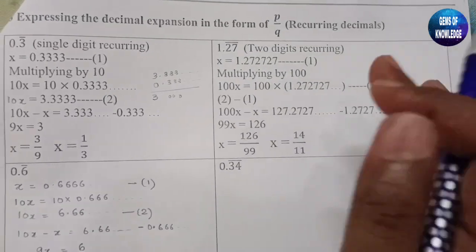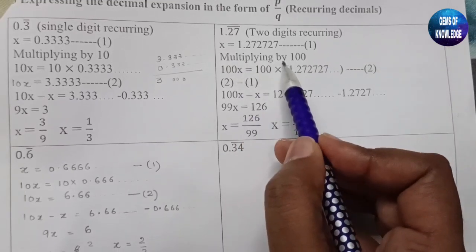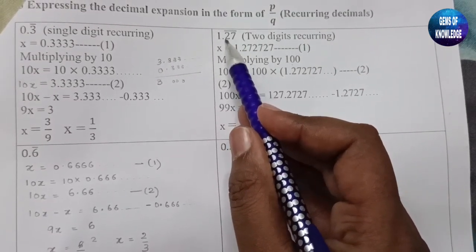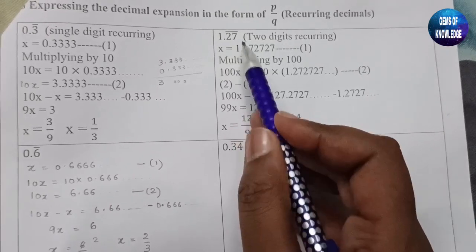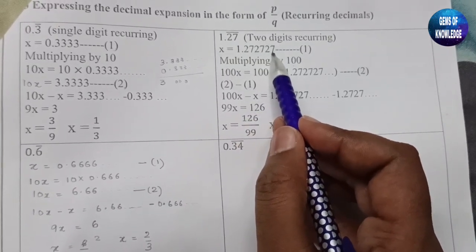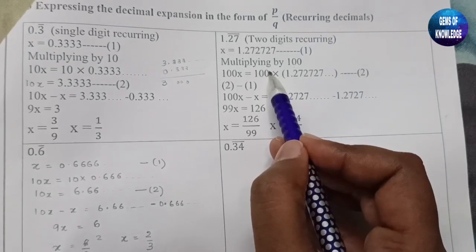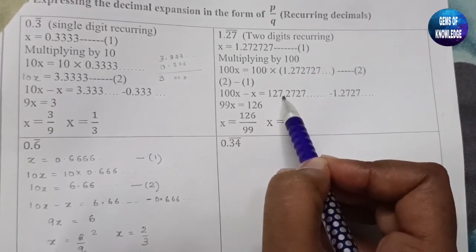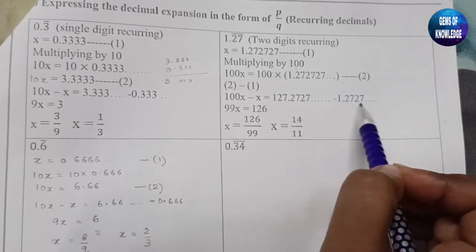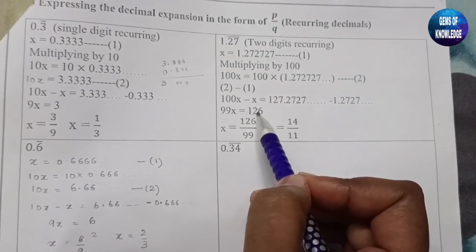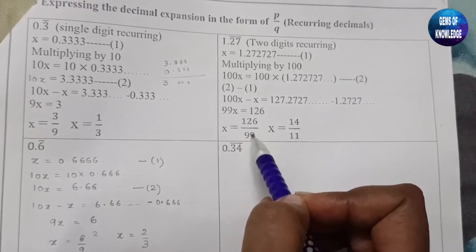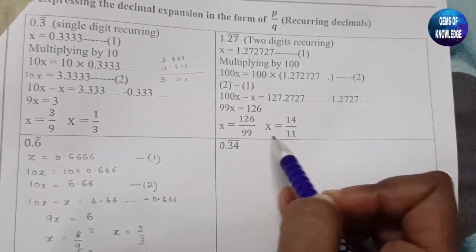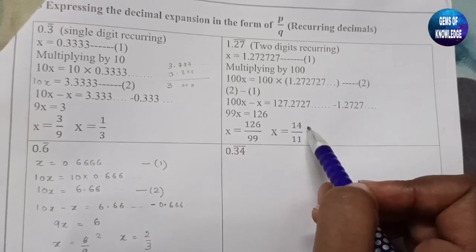For 0.27̄ (0.272727...), two digits are repeating, so we multiply by 100. After multiplying by 100 we get 100x = 27.2727... Subtracting the original equation, we get 99x = 27, so x = 27/99, which can be simplified if possible. The same principle applies — when two digits repeat, multiply by 100.